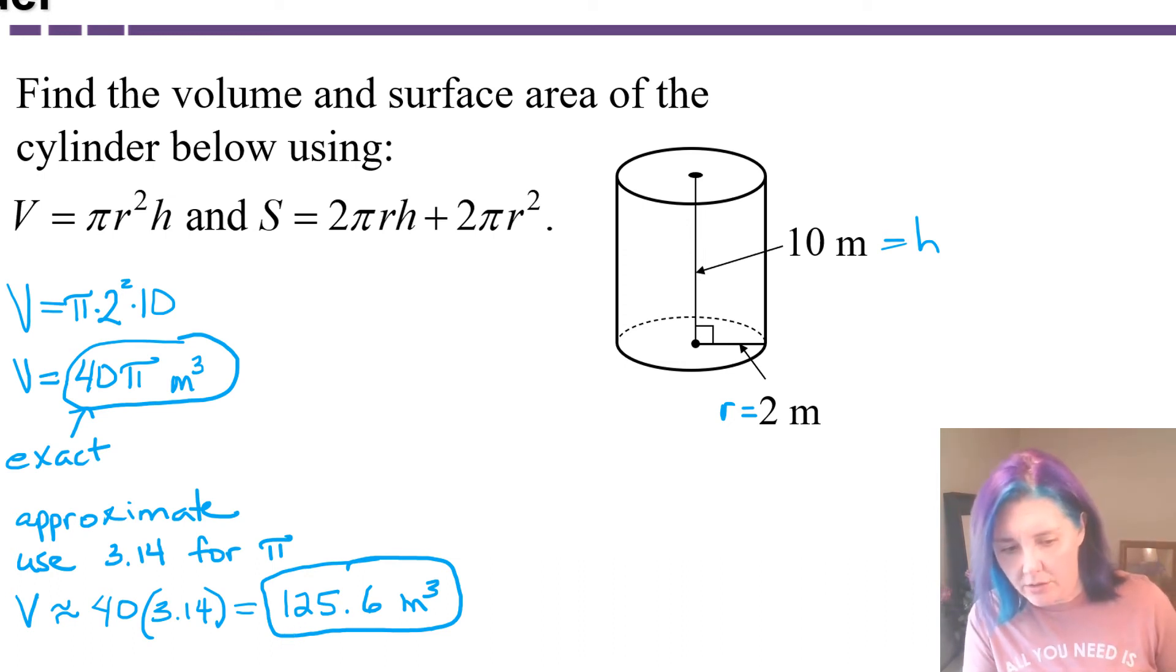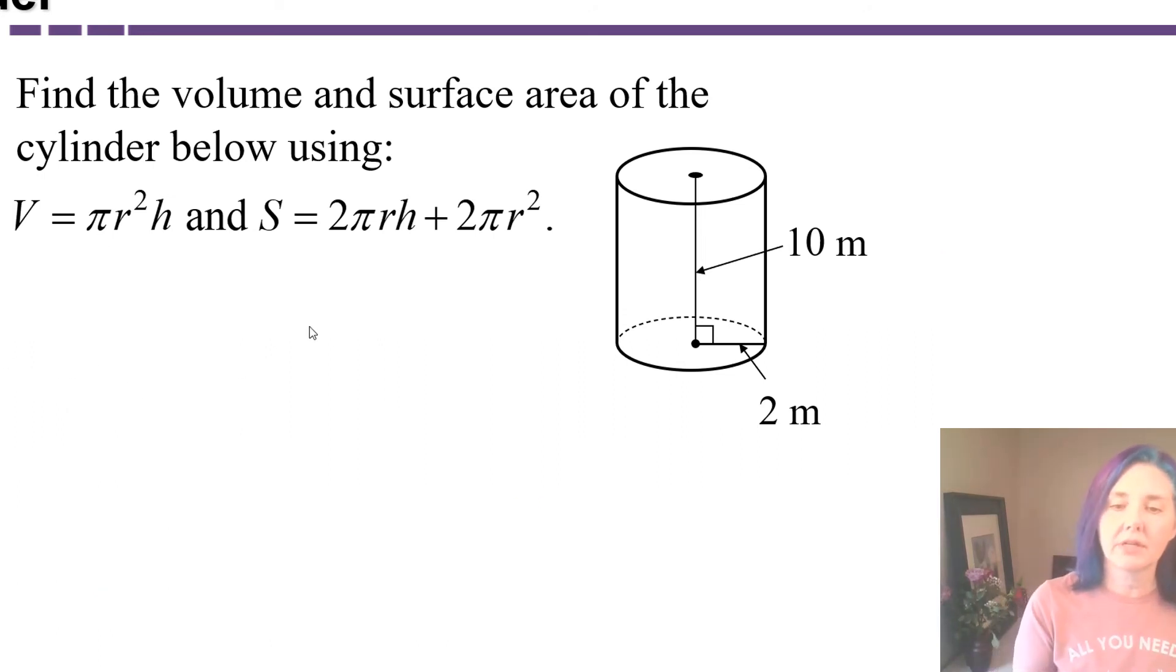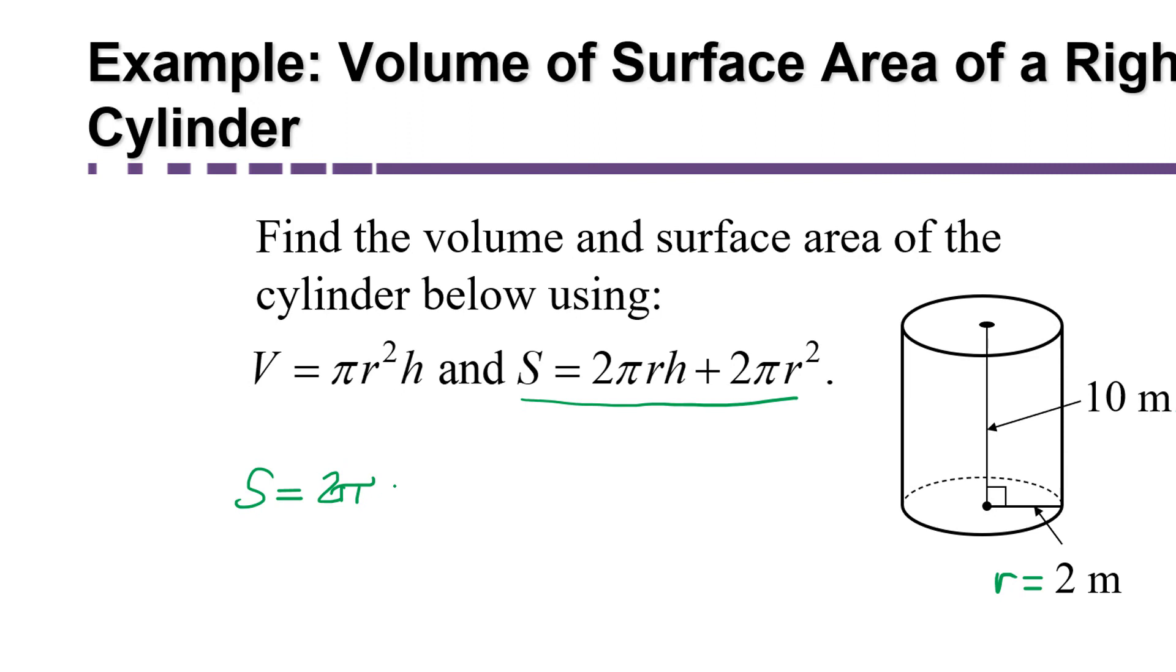Now let's find the surface area for this right circular cylinder. So the formula for surface area is 2 pi rh plus 2 pi r squared. Again, r is 2 meters, h is 10. So our surface area is going to be 2 times pi times r, which is 2, times h, which is 10, plus 2 times pi times 2 squared.